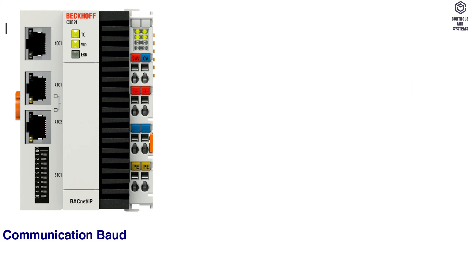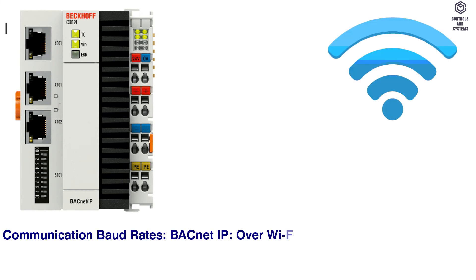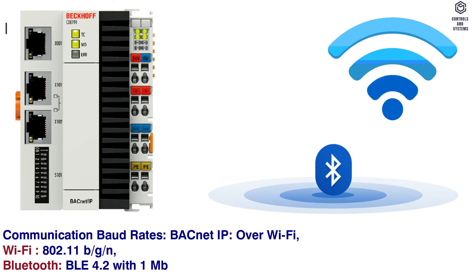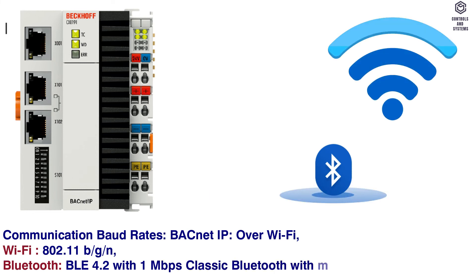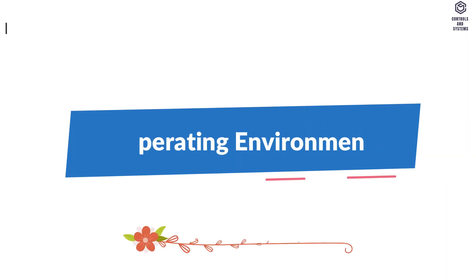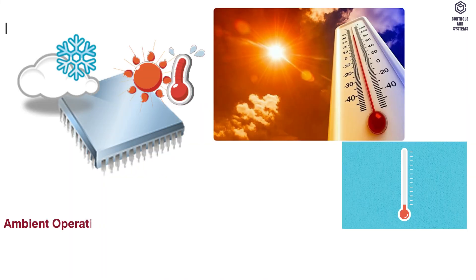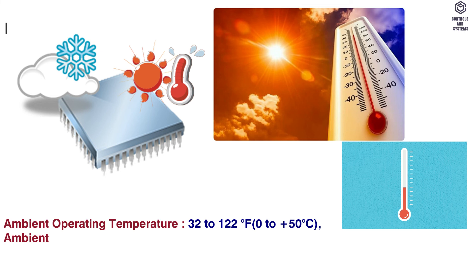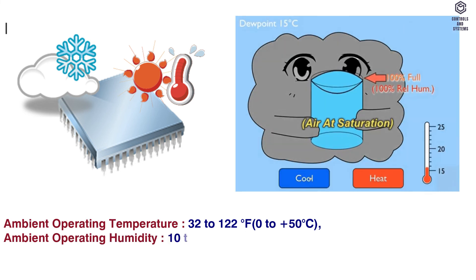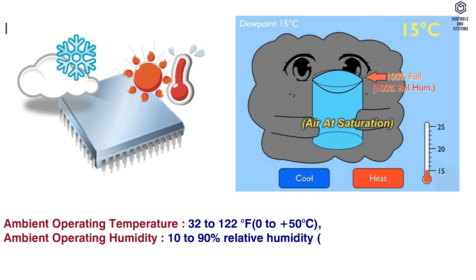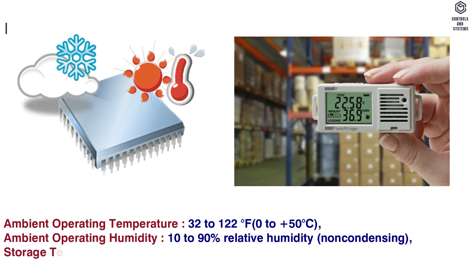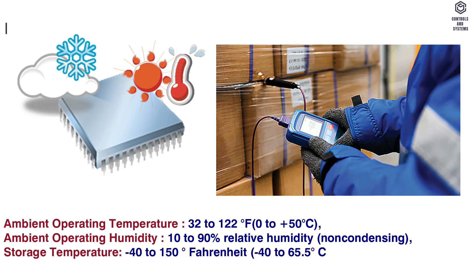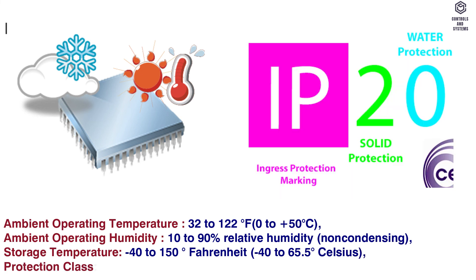Communication: BACnet IP over Wi-Fi. Wi-Fi: 802.11 b/g/n. Bluetooth: BLE 4.2 with 1 Mbps; classic Bluetooth with maximum 3 Mbps. Operating environment: ambient operating temperature 32 to 122°F (0 to +50°C). Ambient operating humidity: 10 to 90% relative humidity, non-condensing. Storage temperature: -40 to 158°F (-40 to 65.5°C). Protection class: IP20.